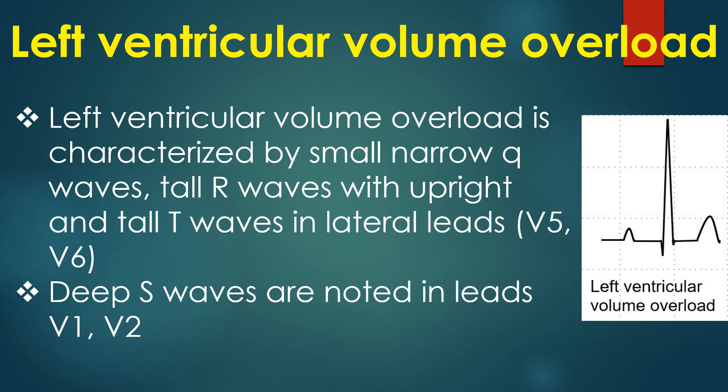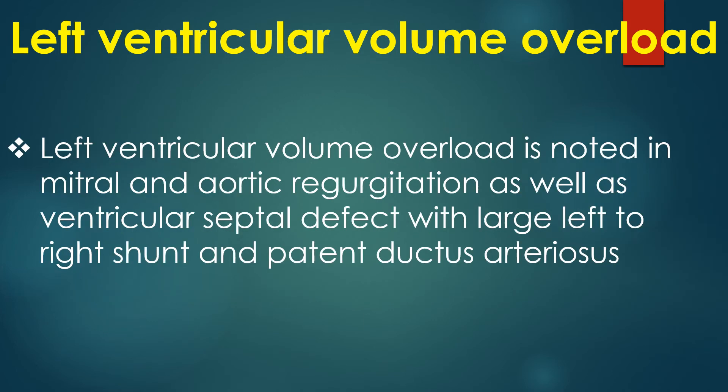Left ventricular volume overload is characterized by small narrow Q waves, tall R waves with upright and tall T waves in lateral leads, and deep S waves in leads V1 and V2. This pattern is noted in mitral and aortic regurgitation, as well as ventricular septal defect with large left-to-right shunt and patent ductus arteriosus.